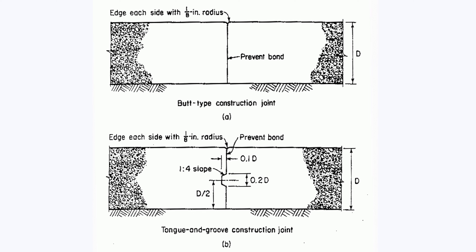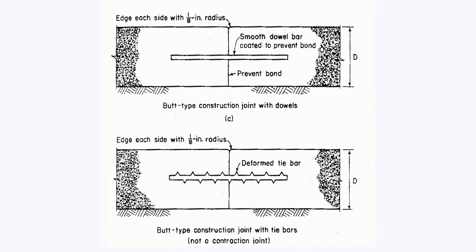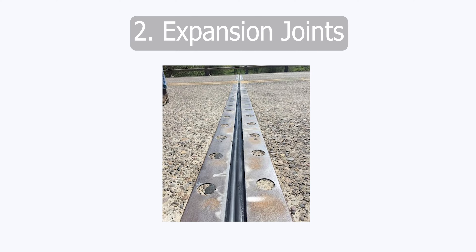There are mainly four types of construction joints: butt-type construction joint, tongue and groove construction joint, butt-type construction joint with dowels, and butt-type construction joint with tie bars. You can see the details of the joints in the given picture.